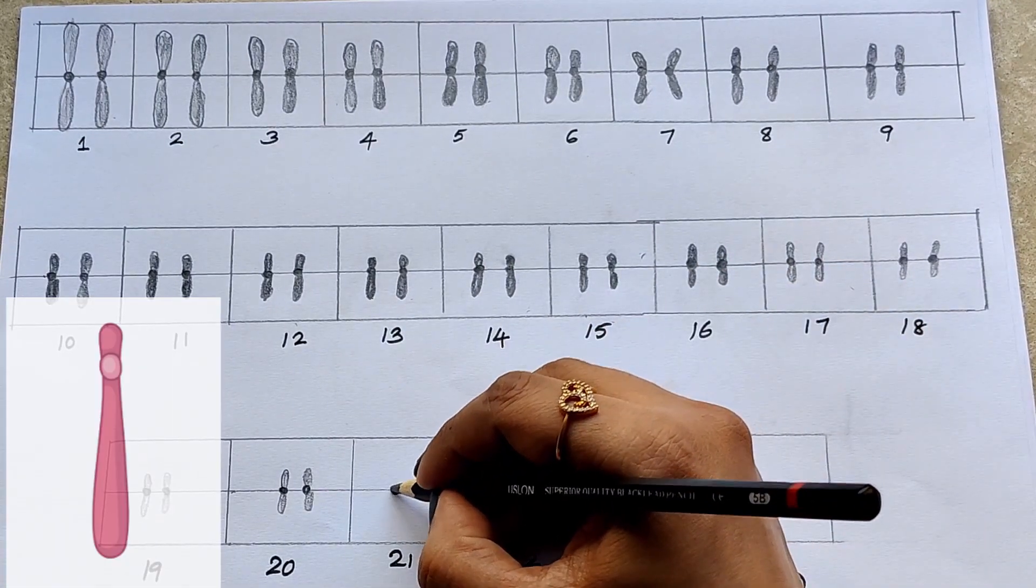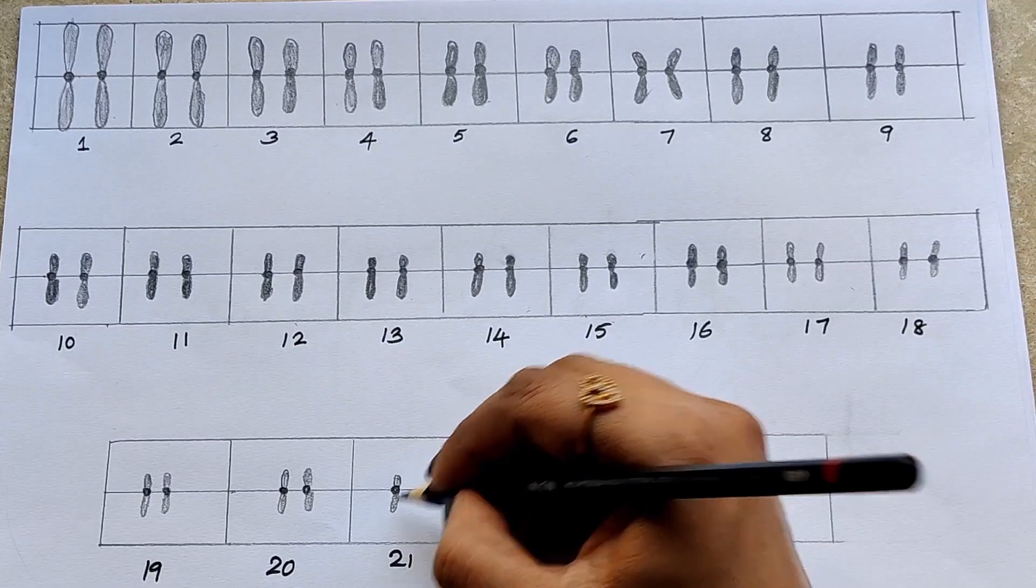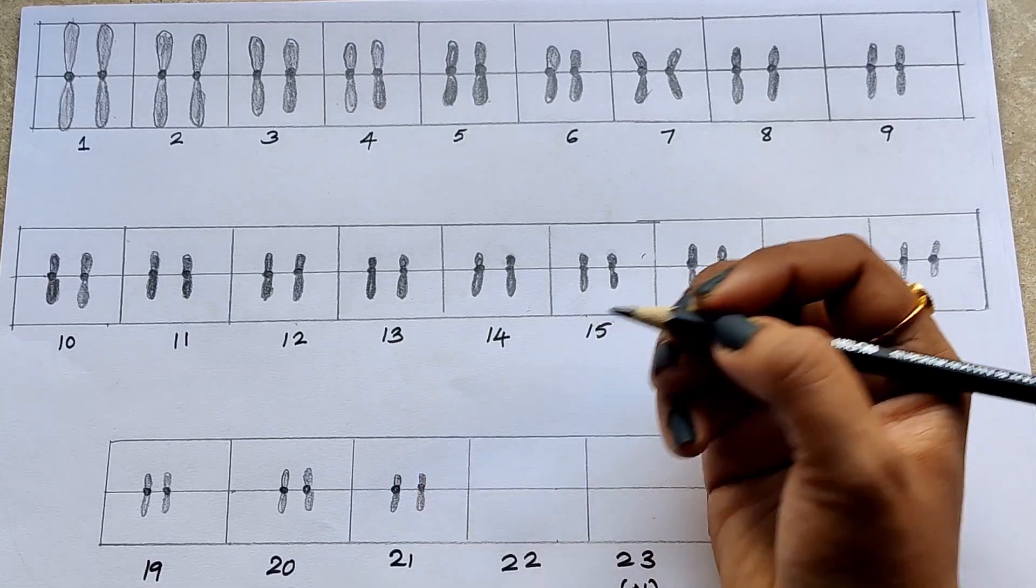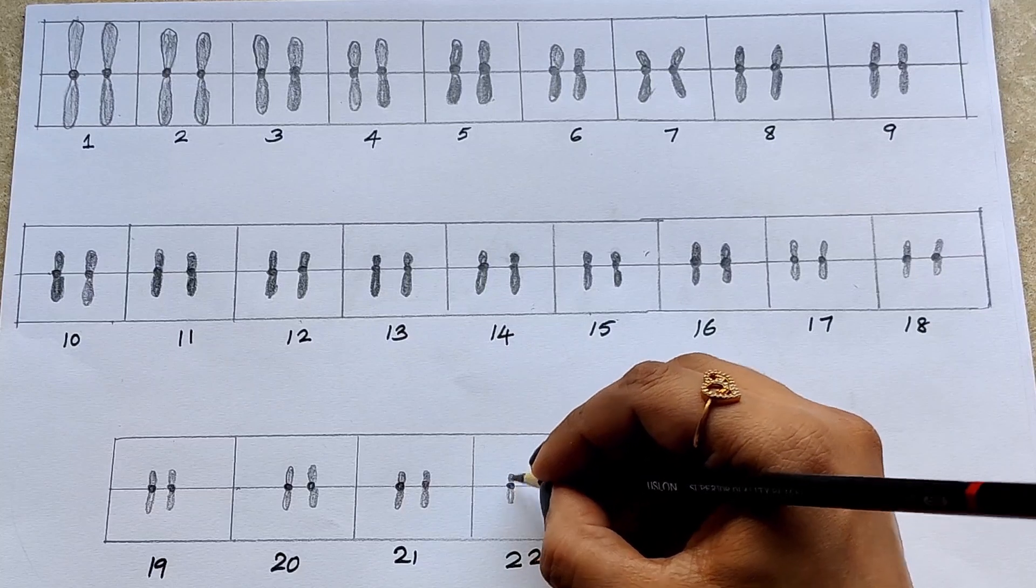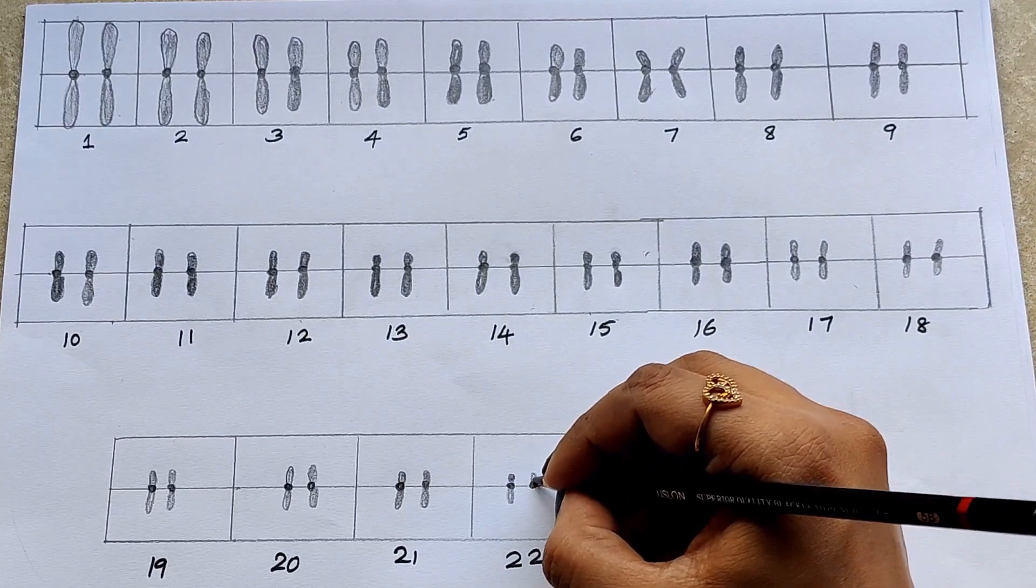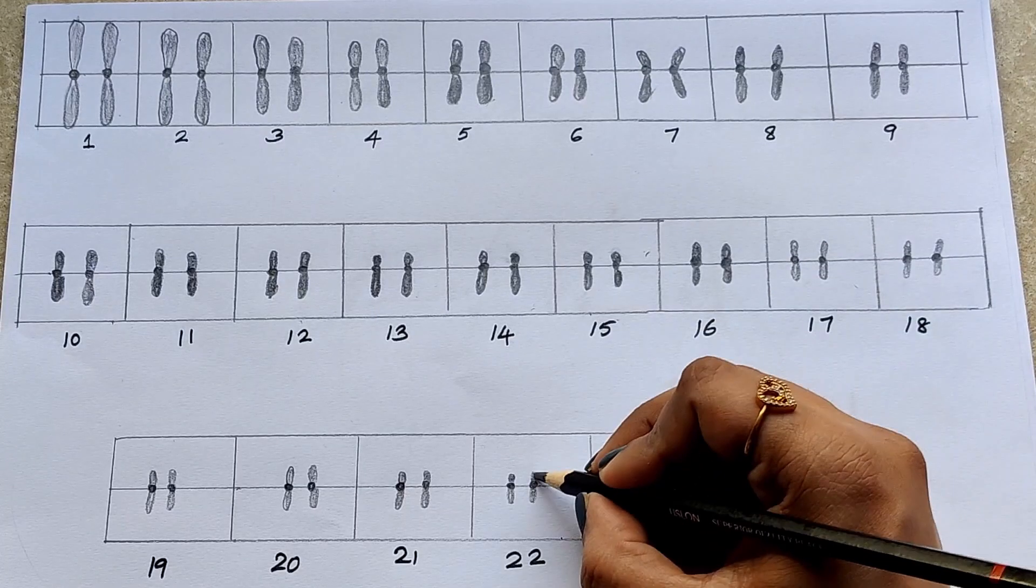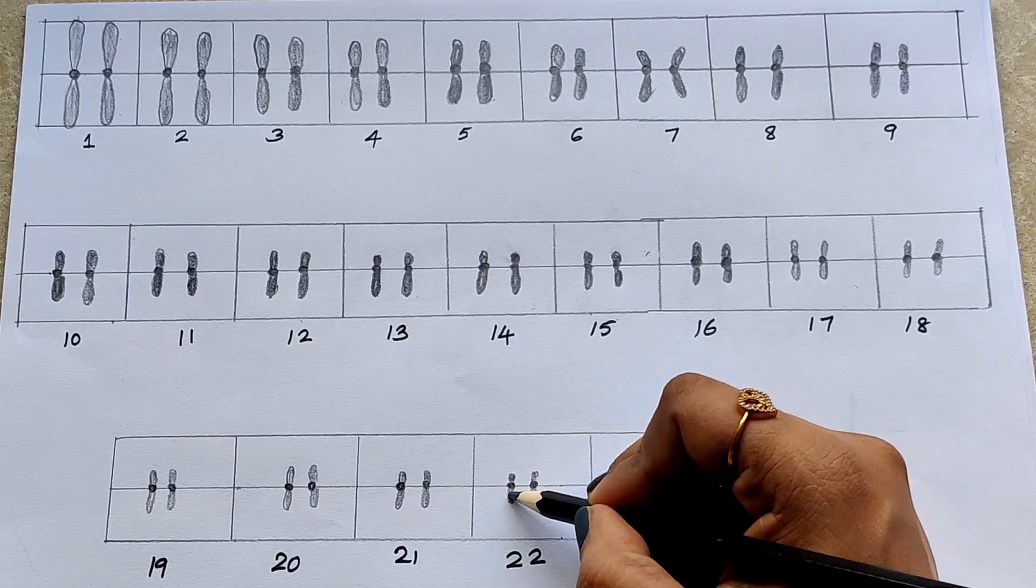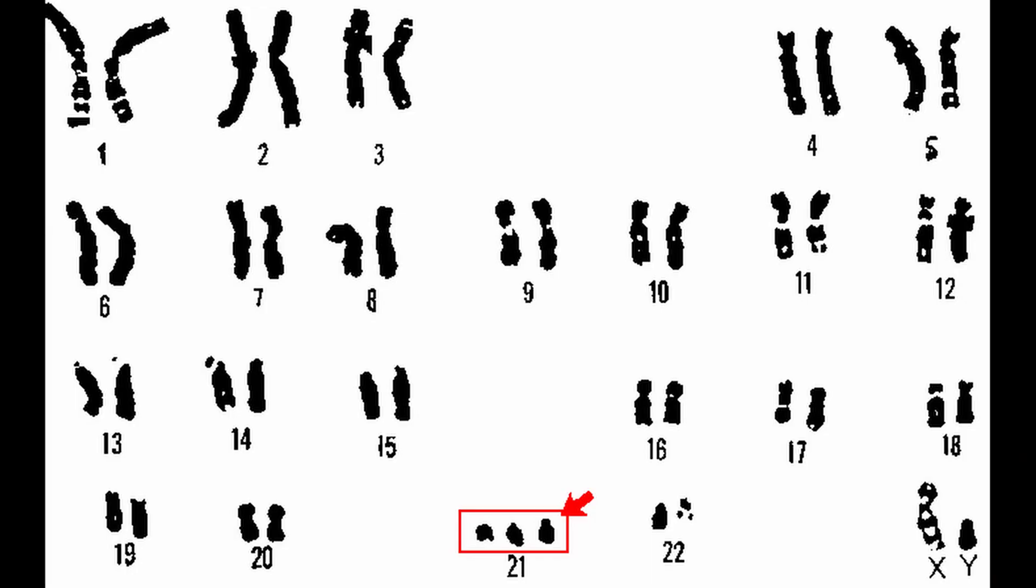21st and 22nd are small acrocentric chromosomes. 21st chromosome is actually smaller than 22nd, but the position is maintained as 22nd was discovered later and by that time the genetic disorder Down syndrome, which is the trisomy of the 21st pair, was discovered.